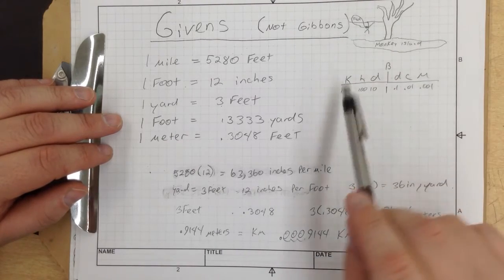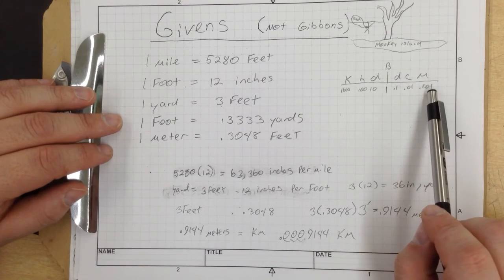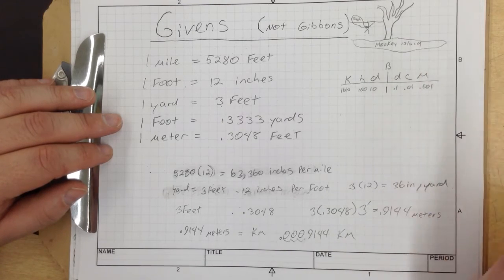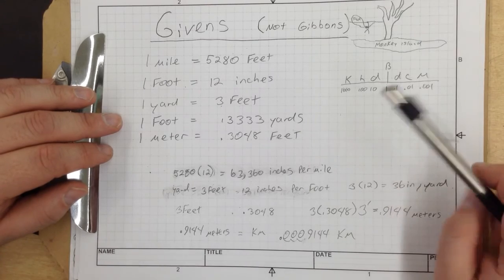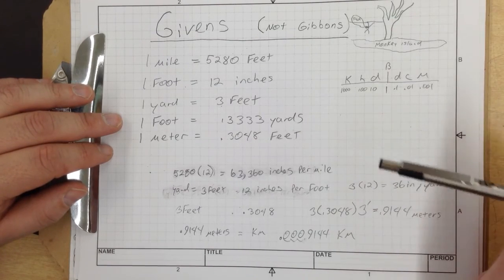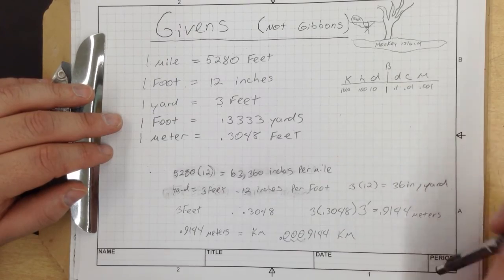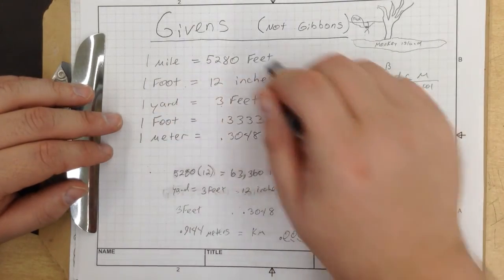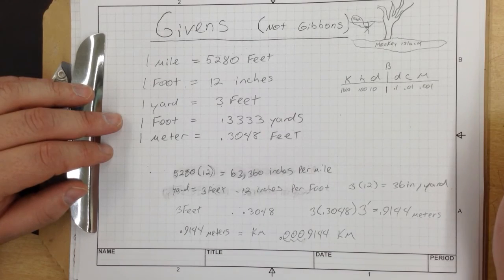With the givens and with this metric equivalency chart, you can figure out pretty much anything conversion-wise. This is kind of a difficult concept to master, so stop this, rewind it, replay it, and I highly recommend that you copy these givens into your notebook. It will help you in the long run.